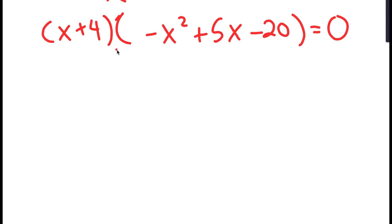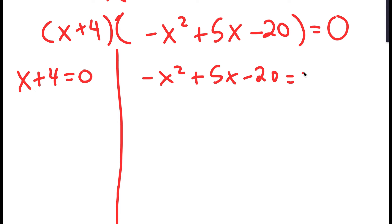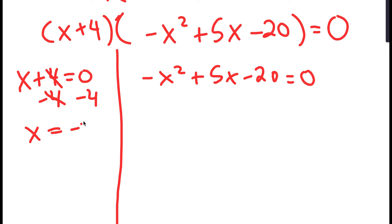So I get two equations from this: x plus 4 equals 0, and negative x squared plus 5x minus 20 equals 0. For x plus 4 equals 0, all we do is subtract 4 on both sides, and we get x equals negative 4.